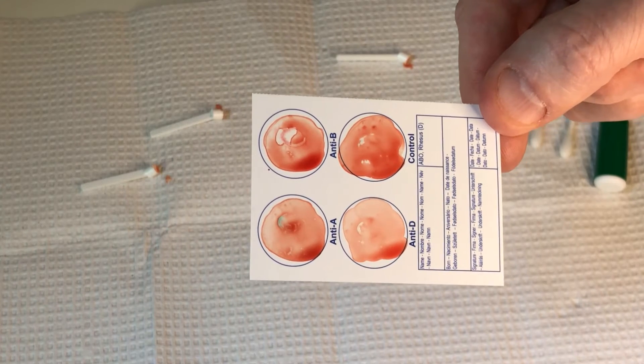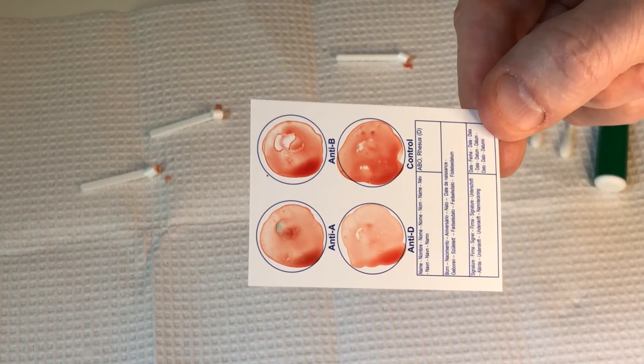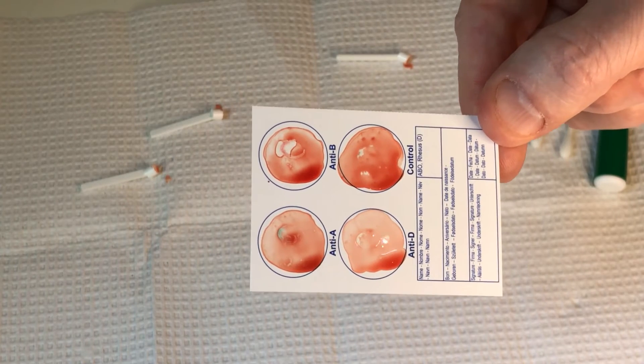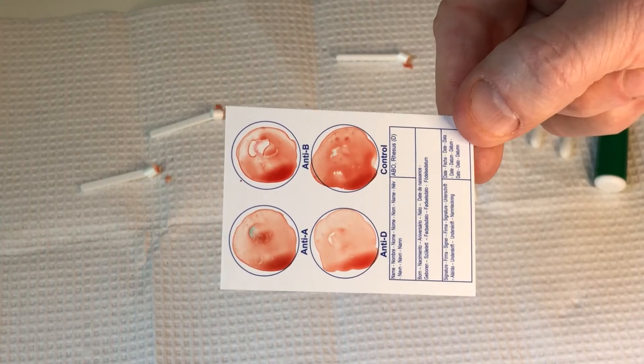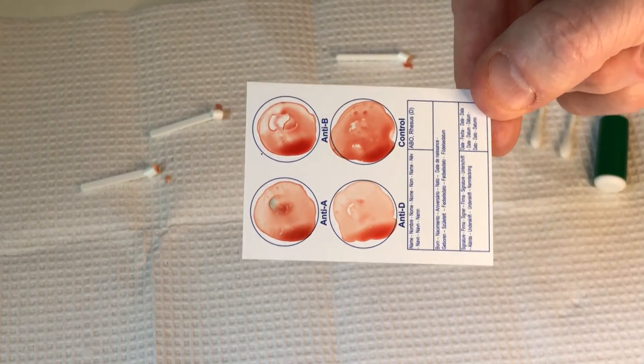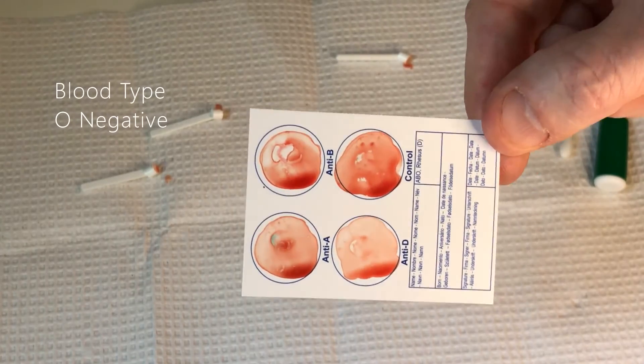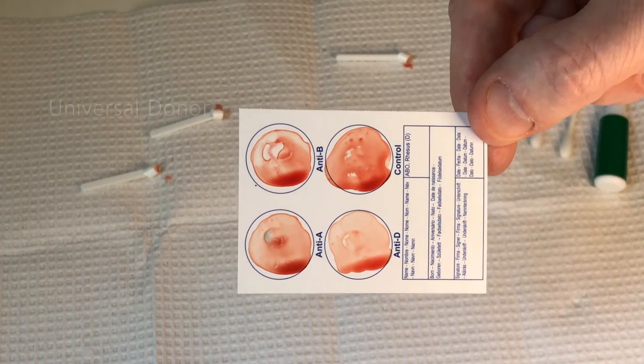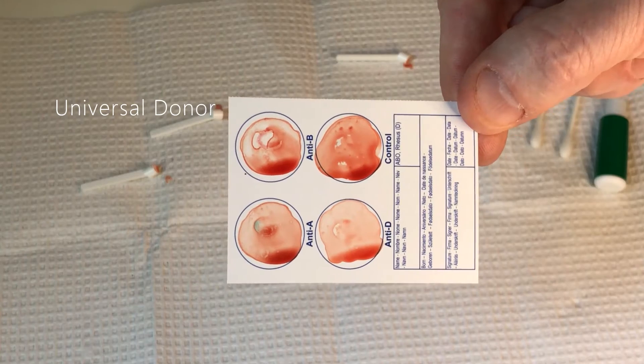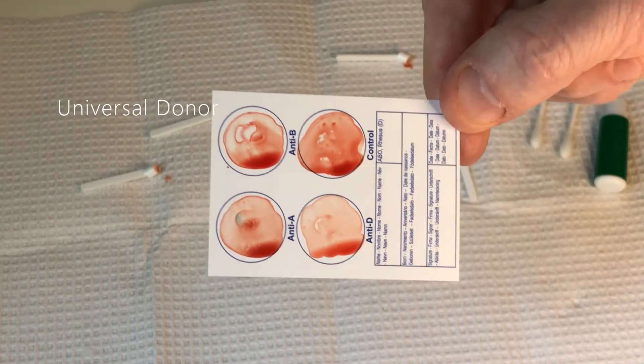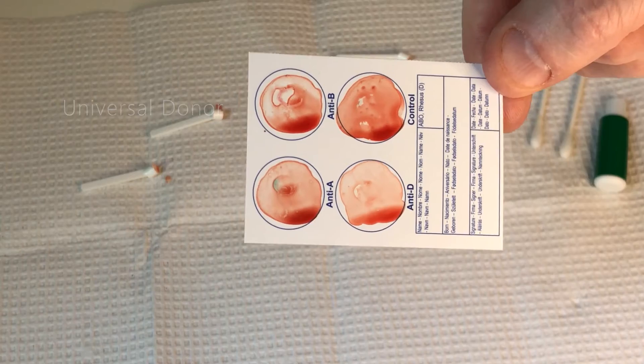What that means is I'm negative for all three of these antigens, which means I don't have the A type, I don't have the B type, and I don't have the positive. So my blood type is O negative, which as you may already know is the universal donor. I don't have any antigens on my blood, therefore I can give blood to anybody because they won't react negatively to it.